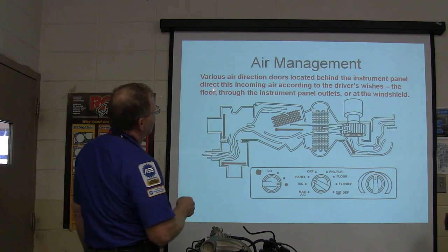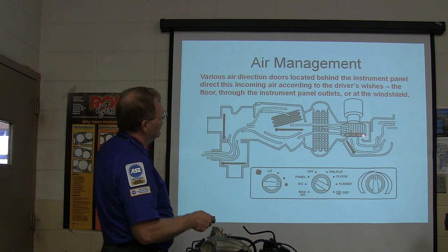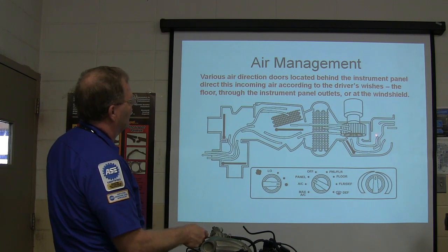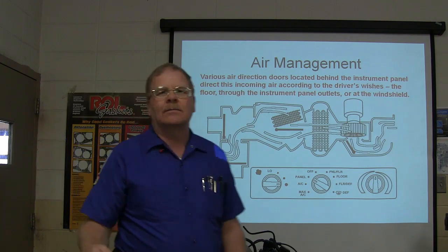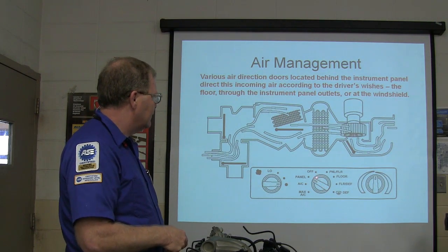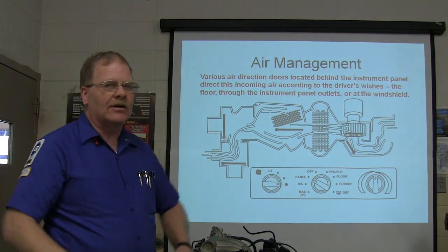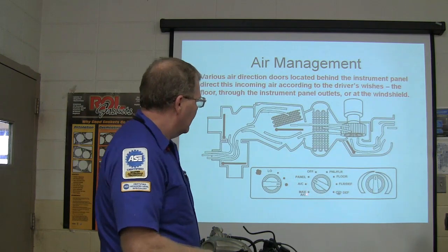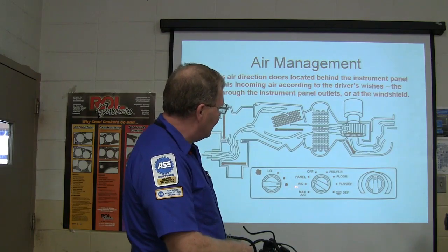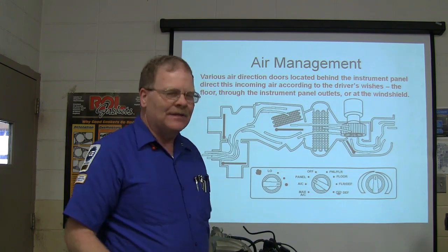There are multiple doors inside the HVAC housing. Your blower motor can pull air from either outside or inside the vehicle. If it's pulling from inside the vehicle, you're on Recirculate. If you don't see a recirculate button, put it on Max AC — that's what does it. Anywhere else you put it — just AC, panel, etc. — you're going to wind up pulling air from the outside.